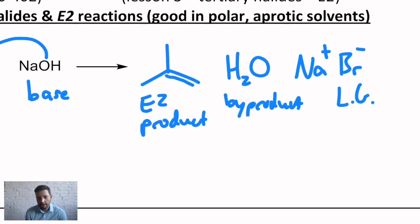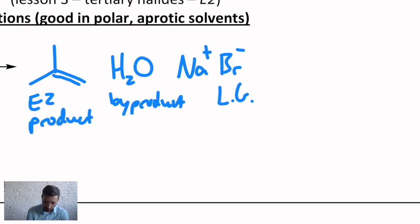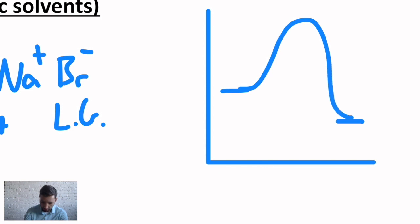Just like the SN2 reaction, this is concerted. So it happens all in one step. So if I drew a reaction energy diagram for this from some arbitrary starting point to some end point, you would have one transition state and no intermediate. Remember, that's what a concerted reaction is.